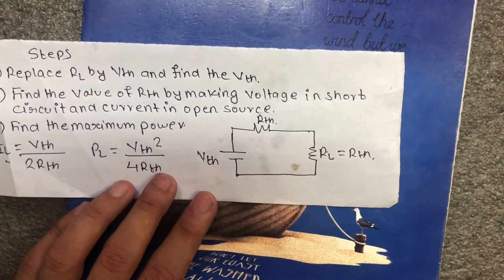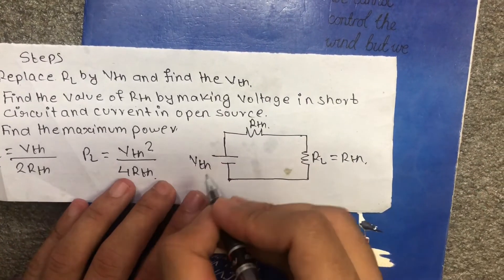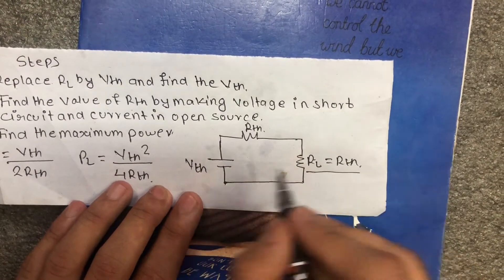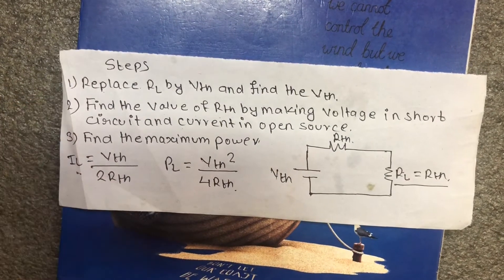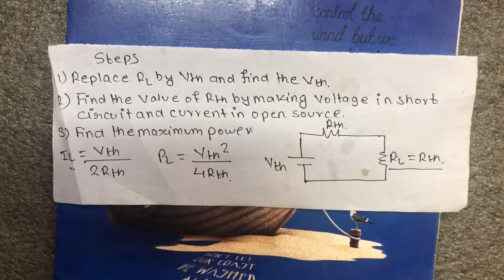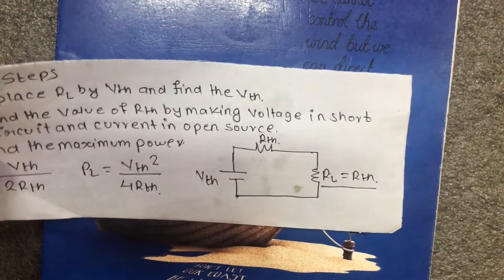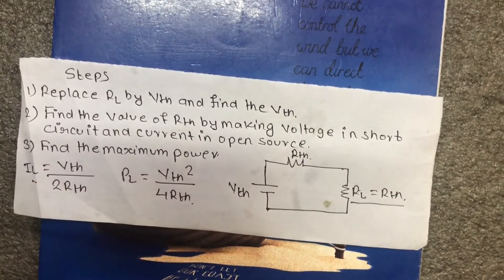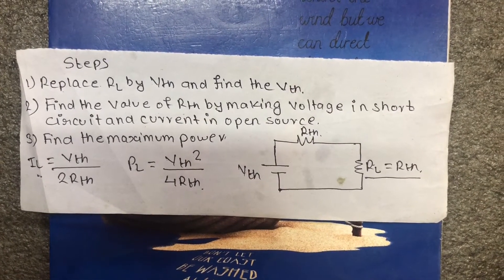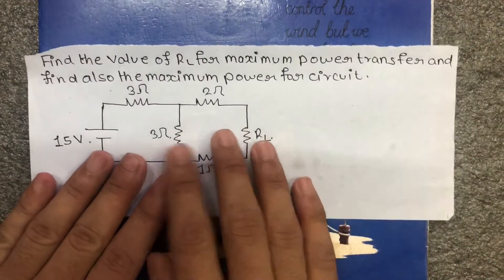The power formula is given as: current equals Vth divided by 2Rth, and power equals Vth squared divided by 4Rth. At the end, apply the Thevenin approach. The series connection formula gives RL equal to Rth. Then we can solve any example using this theorem.